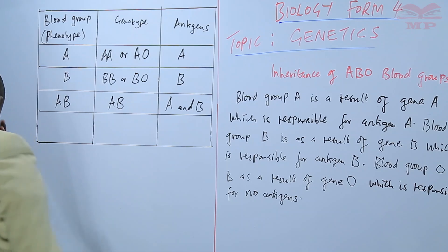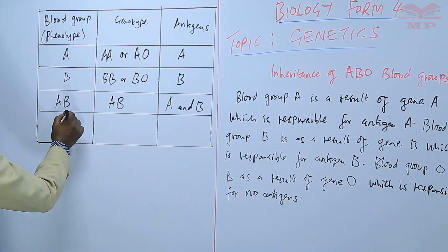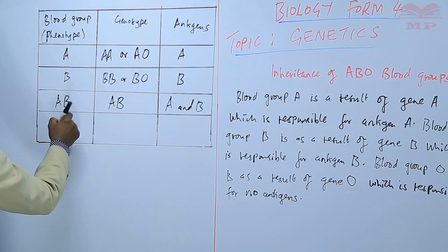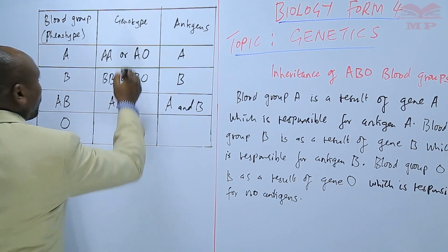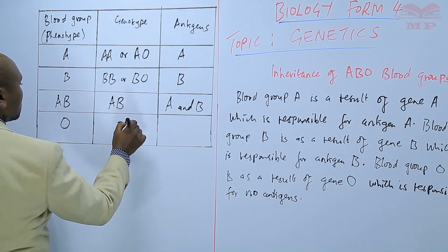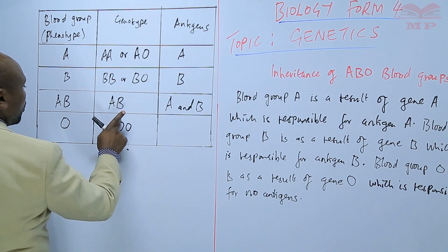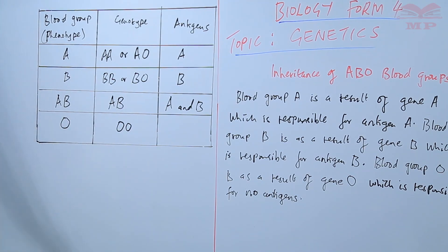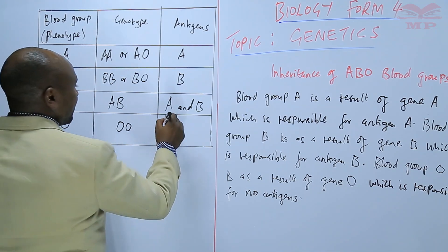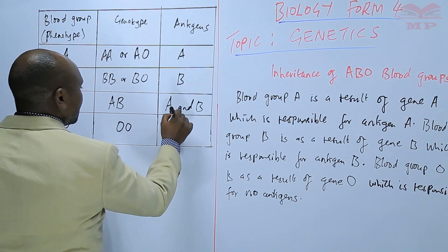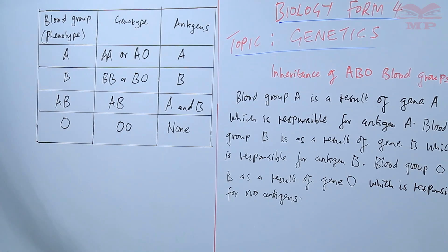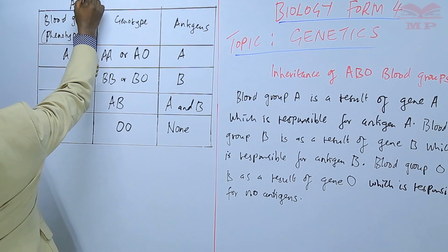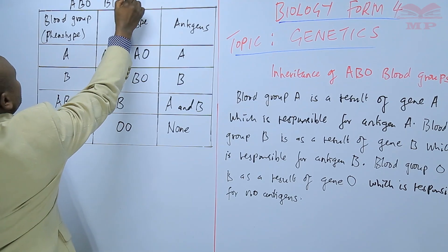Blood group O, that is phenotype O: the genotype of O can only be OO. Where there is either A or B, we cannot have blood group O. Blood group O has no antigens — none of them are present. This is a summary of the ABO blood groups.